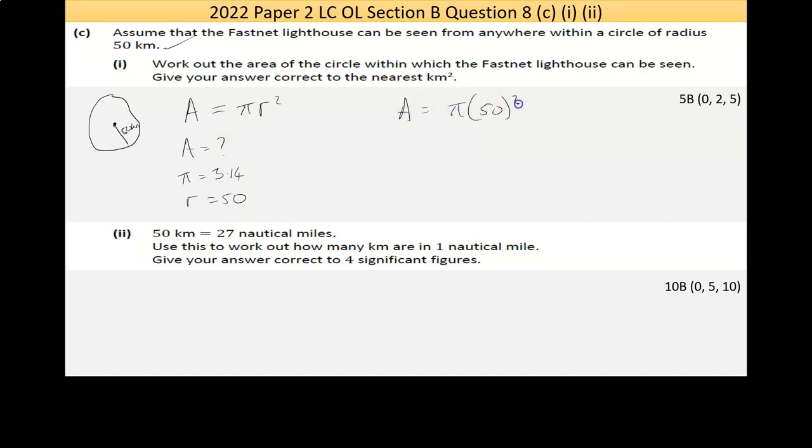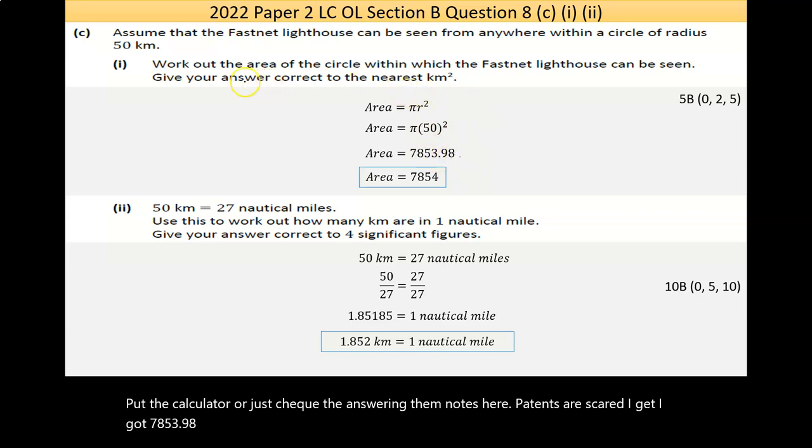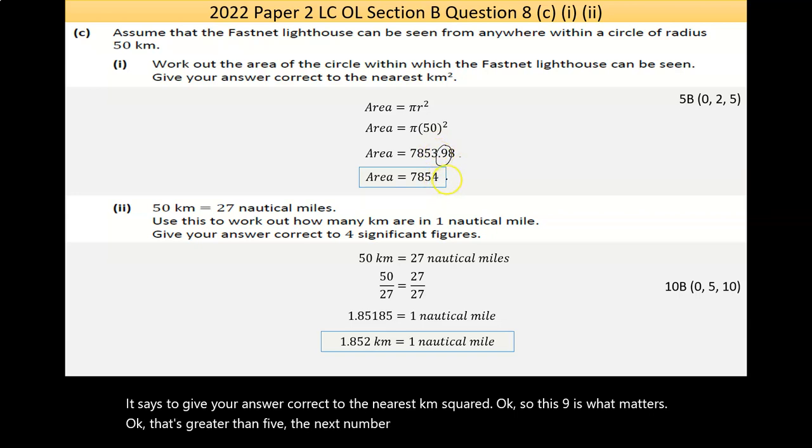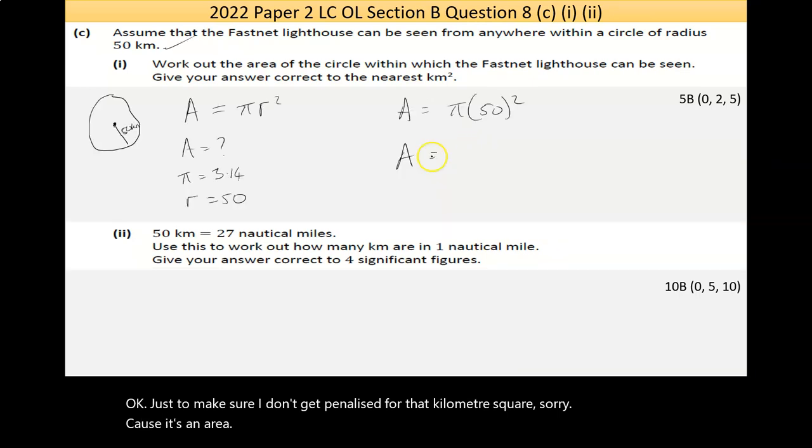50 squared. Put that to the calculator. I'll just check the answer in the notes here. Pi times 50 squared. I get 7853.98. It says to give your answer, to correct to the nearest km squared. So this 9 is what matters. That's greater than 5. The next number rounds up by 1. I get 7854, and I should put in kilometers. Just to make sure I don't get penalized for that. Actually, kilometers squared, sorry. Because it's an area. The answer is 7854.